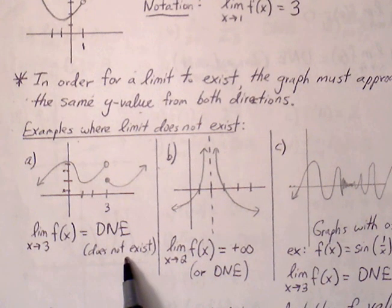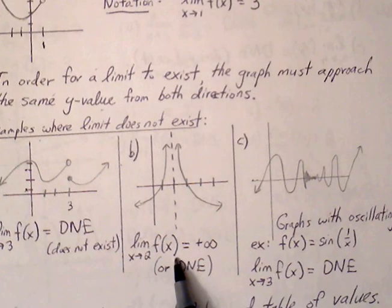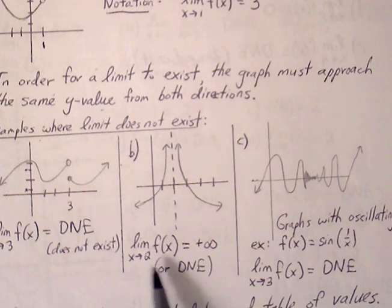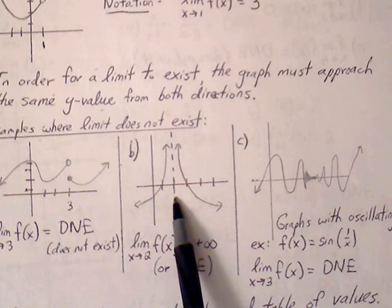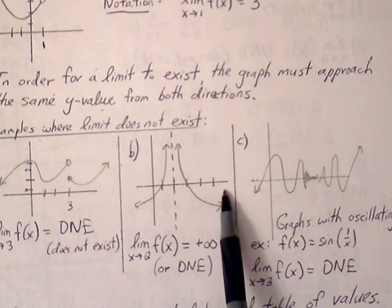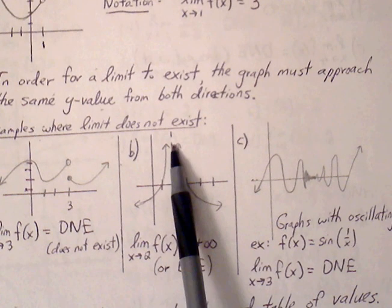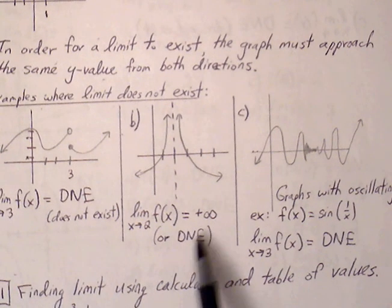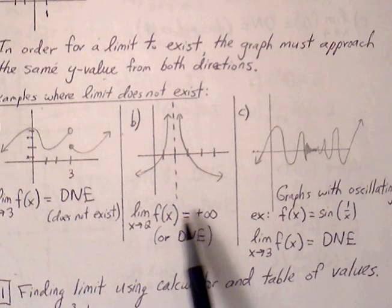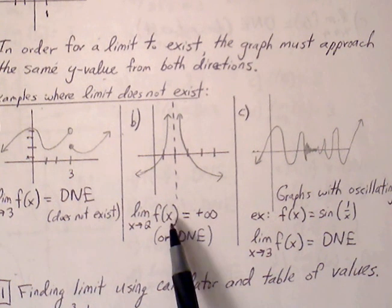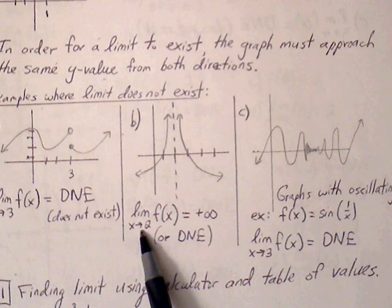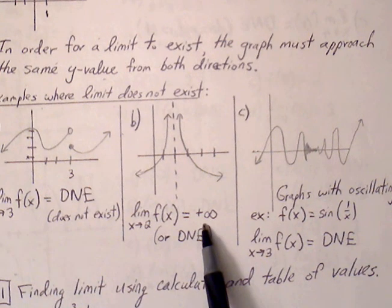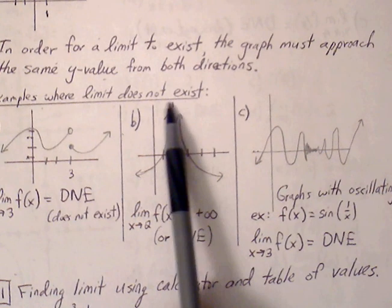Another example of where the limit does not exist is graph B, where as we approach the x-value of 2, the y-value does not approach a real number. We can say that the limit does not exist, but more specifically, we can say that the limit of f(x) as x approaches 2 is equal to positive infinity, and positive infinity is the reason why the limit does not exist.